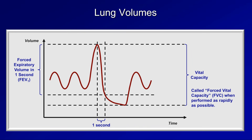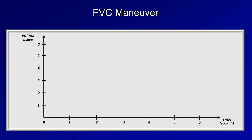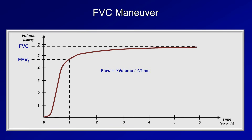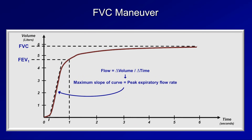Looking at FVC and FEV1 from a slightly different perspective: this graph of exhaled volume as a function of time is more typical of what a modern digital spirometer produces. The patient starts with a full maximal inspiration and then exhales as quickly as possible. The volume exhaled within the first second is the FEV1, and the maximum exhaled volume — typically achieved by six seconds — is the FVC. Additionally, since airflow is the change in volume over the change in time, the maximum slope of this curve equals the peak expiratory flow rate, sometimes abbreviated PEFR.